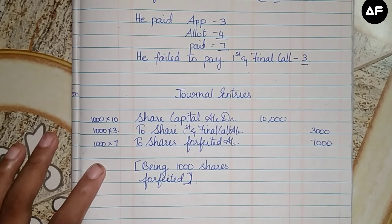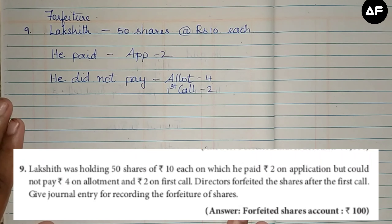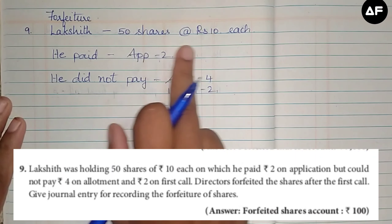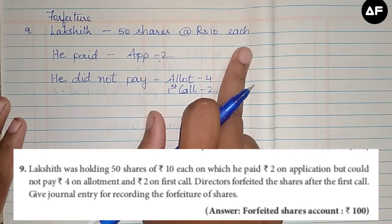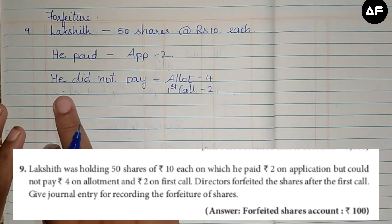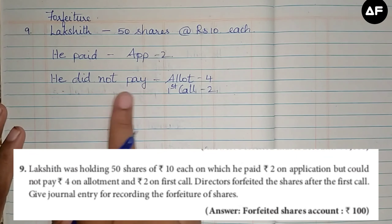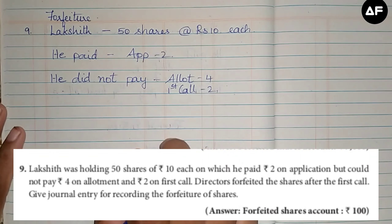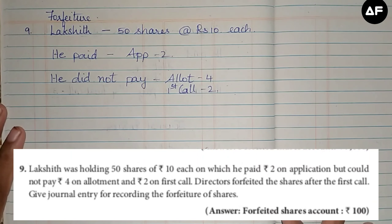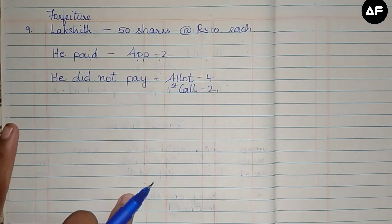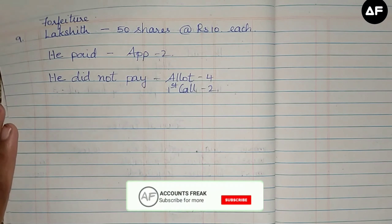Forfeiture sum number 9: Lakshat was holding 50 shares at ₹10 each. He paid ₹2 on application but could not pay ₹4 on allotment and ₹2 on first call. The directors forfeited his shares after the first call — meaning the shares were cancelled before the final call was even made. We need to give journal entries for recording the forfeiture of shares.